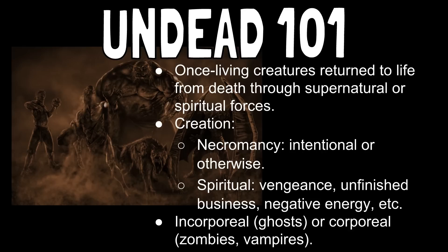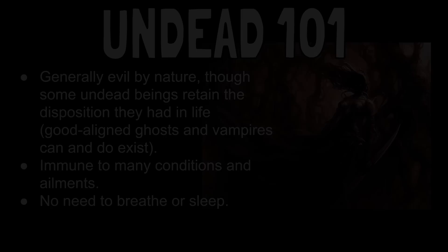There are also typically two different kinds of undead. There's incorporeal — things like ghosts and wraiths that don't necessarily exist physically on our plane of existence — and then corporeal, things like zombies, vampires, and skeletons. You will also see kinds of undead that can shift between the corporeal and the incorporeal.